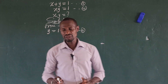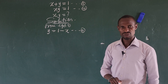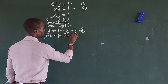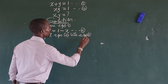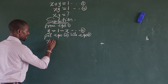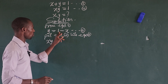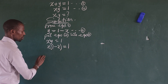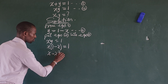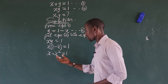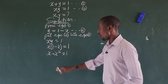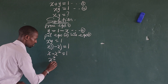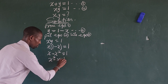Now we want to substitute equation three into equation two. Our equation two is xy equal to 1, so wherever we see y, we put in 1 minus x. This gives us x times bracket 1 minus x close bracket equals 1. Opening up the bracket gives us x minus x squared equals 1. Rearranging this quadratic equation by moving all terms to one side gives us x squared minus x plus 1 equals 0.